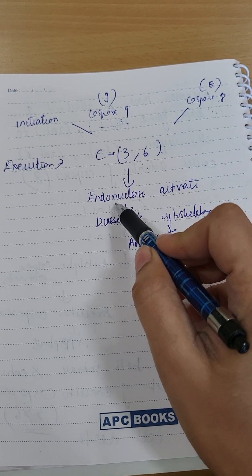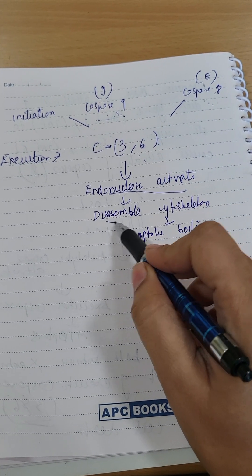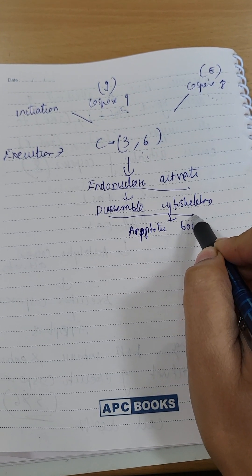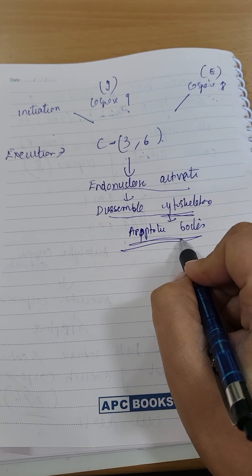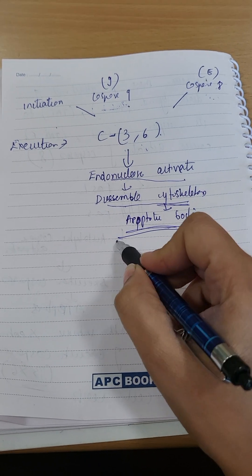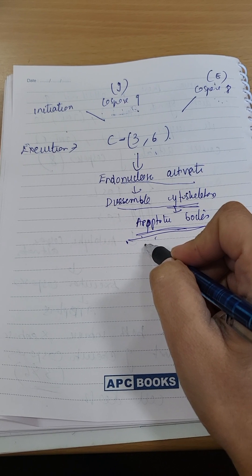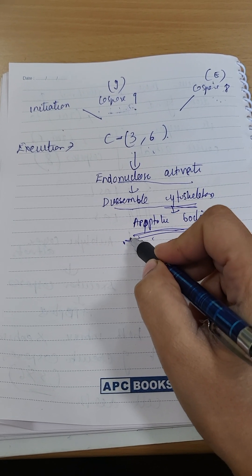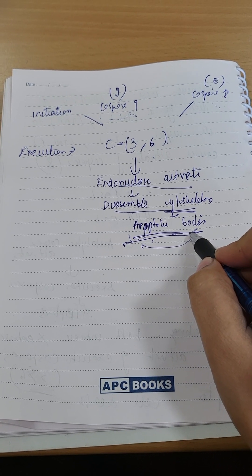Executioner will activate endonuclease. When it activates enzymes, it will disassemble or break down the cytoskeleton and result in the formation of apoptotic bodies. So this is the whole mechanism of apoptosis: intrinsic pathway, extrinsic pathway under the initiation phase, and finally execution phase with formation of apoptotic bodies.